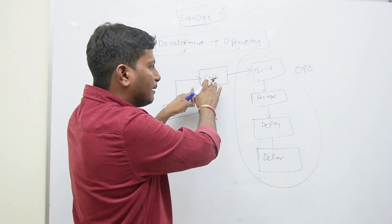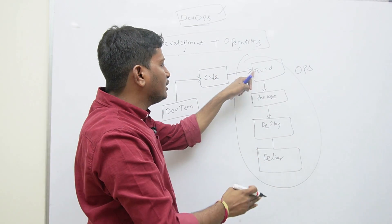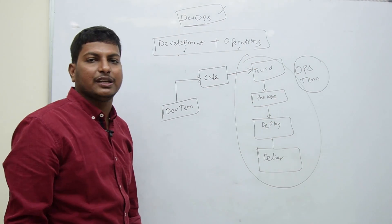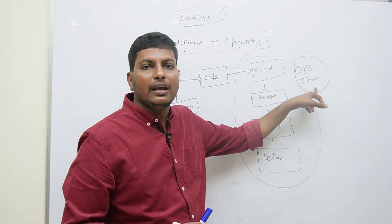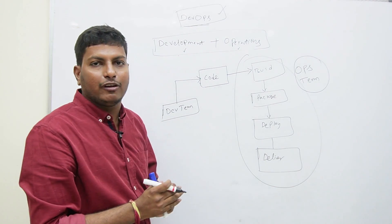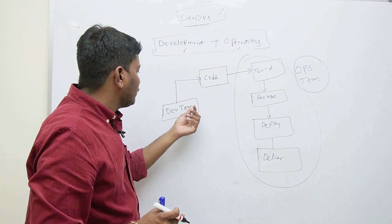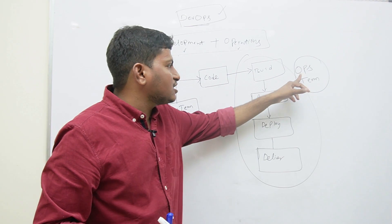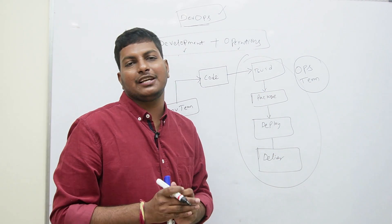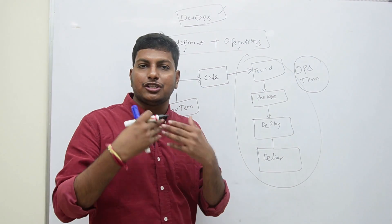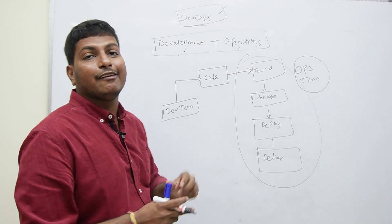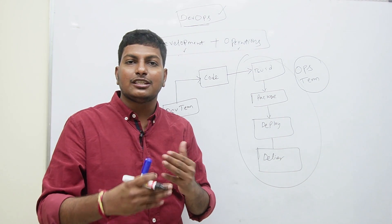The development team does the coding part. Once coding is completed, we need to perform operations on the code to convert it into an executable application. That's where the operations team comes in. In the project, both development team and operations team will be available. To achieve the goal, there should be collaboration between development and operations teams — what code they are developing, what functionality they are delivering.